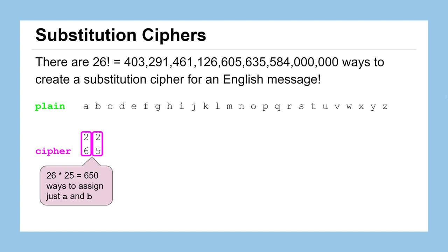There's just 650 ways to assign letters A and B in the plaintext to some letters in the ciphertext. Following that through for the rest of our letters, we have 26 times 25 times 24 and so on, which is known as a factorial in mathematics. 26 factorial leads to some very large number of possible plaintext to ciphertext mappings.